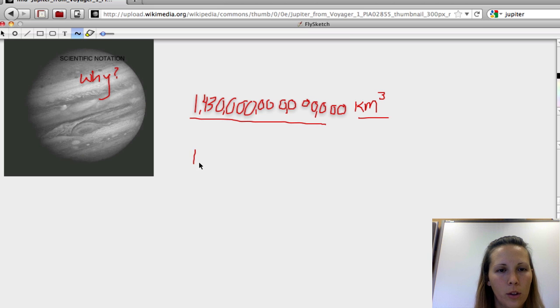So the way you do that, you put a decimal in between the first two numbers. And then we erase all of these zeros.